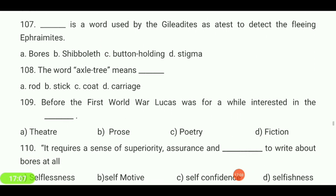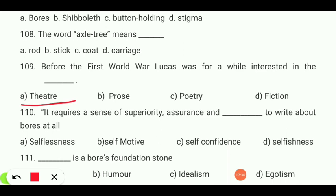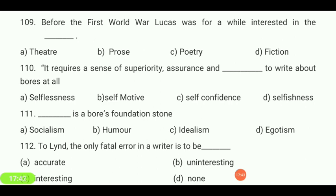The word 'axletree' means — rod, stick, coat, or carries? Your answer is 'rod.' Before the First World War, Lucas was for a while interested in — theater, prose, poetry, or fiction? It is 'theater.' It requires a sense of superiority, assurance, and — selfishness, selflessness, self-motive, or self-confidence — to write about boars. Answer is 'self-confidence.'